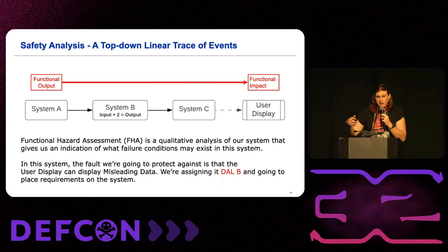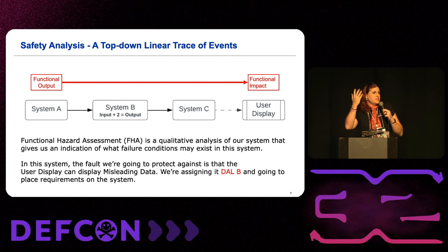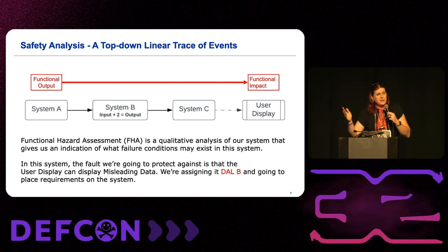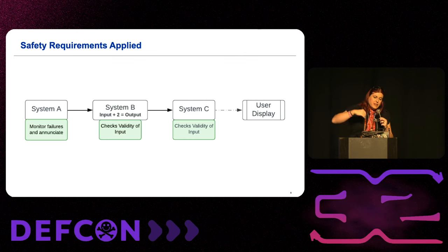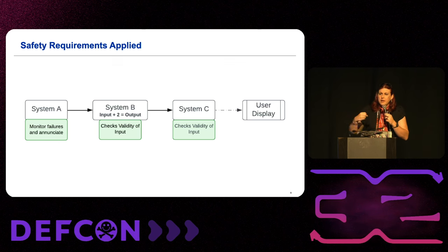We're going to do a safety analysis on a system. We have System A, System B, System C, and a user display. We do our functional hazard assessment, and it says this system has a function that is DAL B — a path of DAL B hazardously misleading data to a display. We apply safety requirements: monitors for failures, enunciation of those failures, validity checks on inputs for System B and System C. System B is going to do a simple operation — adding, changing, or merging data at some point.